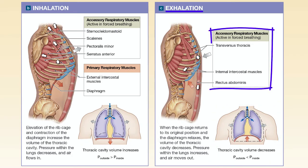When exhaling forcefully, like when blowing out a candle, accessory expiratory muscles — such as transversus thoracis, internal intercostals, and rectus abdominis — also help.